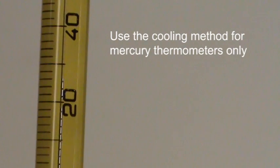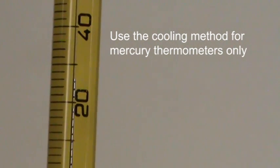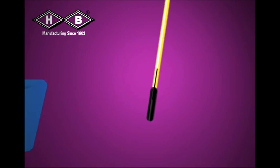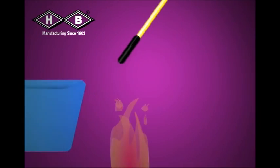The cooling method should only be used with mercury thermometers unless they have a contraction chamber, because this method may cause other liquids to freeze and the bulb to break. Depending on the separation, it may be necessary to apply both methods.